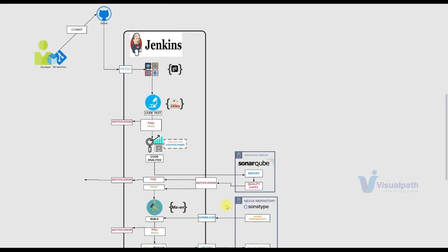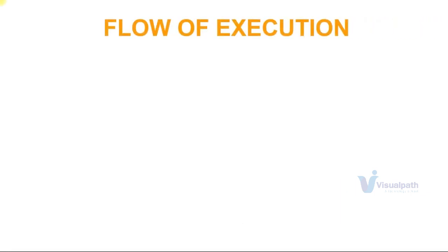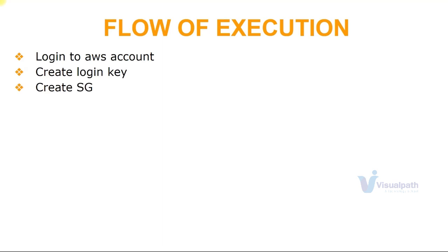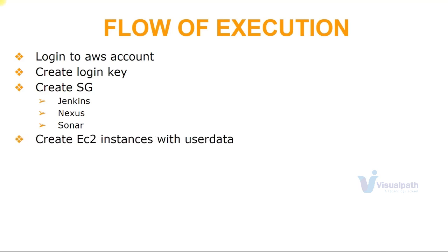Now let's see the step-by-step process of our execution. First, we'll log into our AWS account. We're going to create a login key for our servers. We'll create security groups for three servers: Jenkins, Nexus, and SonarQube. And we're going to create these EC2 instances where we'll set up these servers with user data, so they will be automatically provisioned.